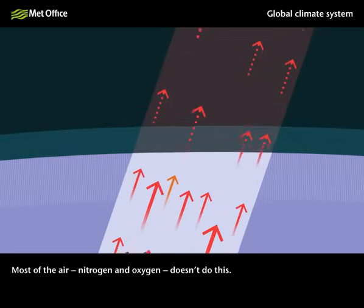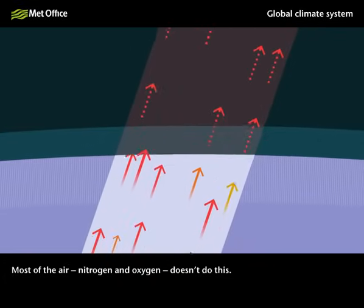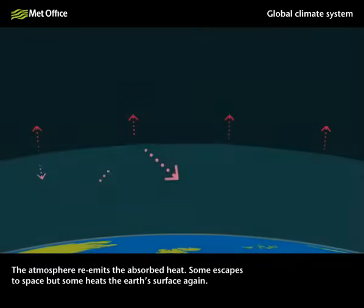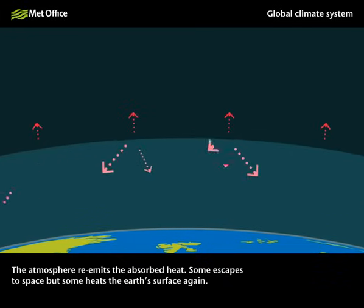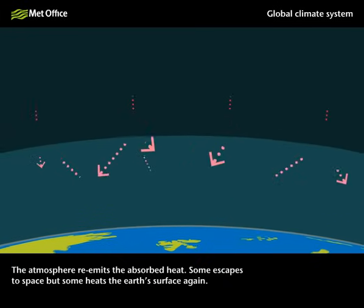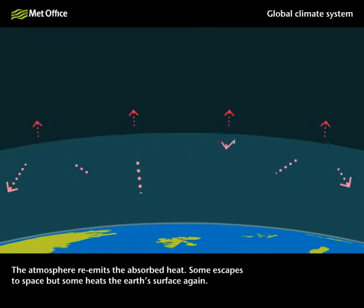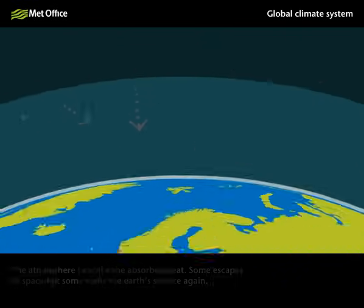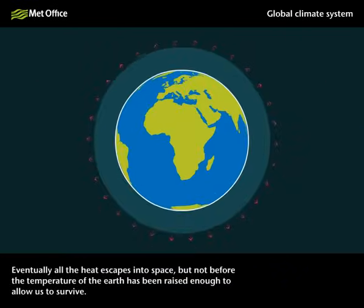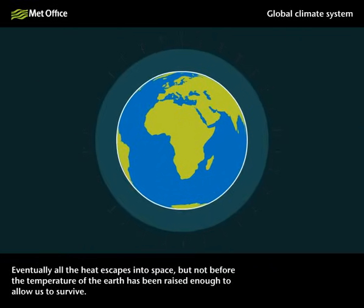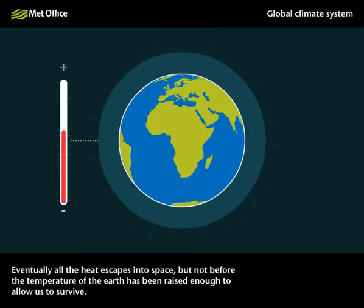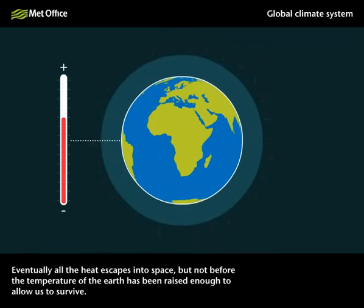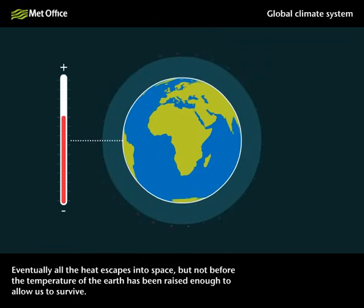Most of the air — nitrogen and oxygen — doesn't do this. The atmosphere re-emits the absorbed heat. Some escapes to space, but some heats the Earth's surface again. Eventually all the heat escapes into space, but not before the temperature of the Earth has been raised enough to allow us to survive.